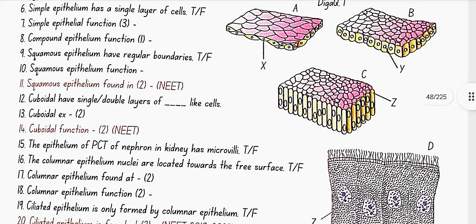Squamous epithelium have regular boundaries. No, this is false. They have irregular boundaries. Squamous epithelium function is it forms a diffusion boundary. Squamous epithelium is found in walls of blood vessels and air sacs of lungs.